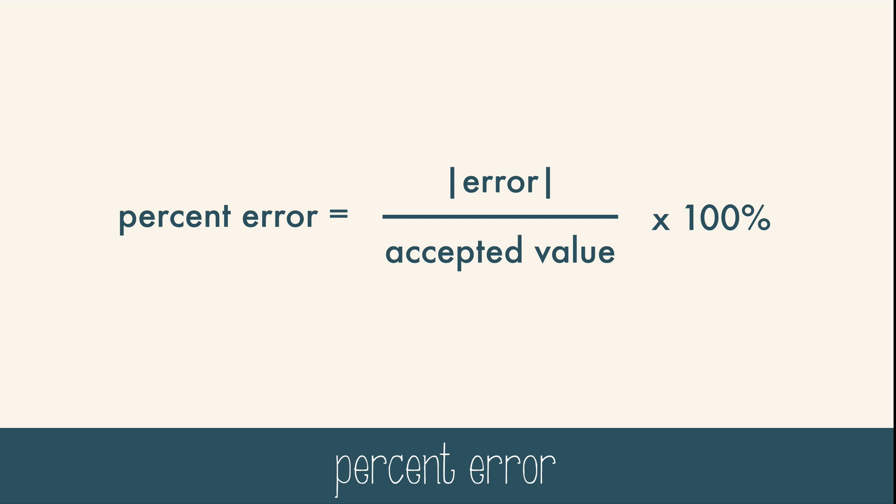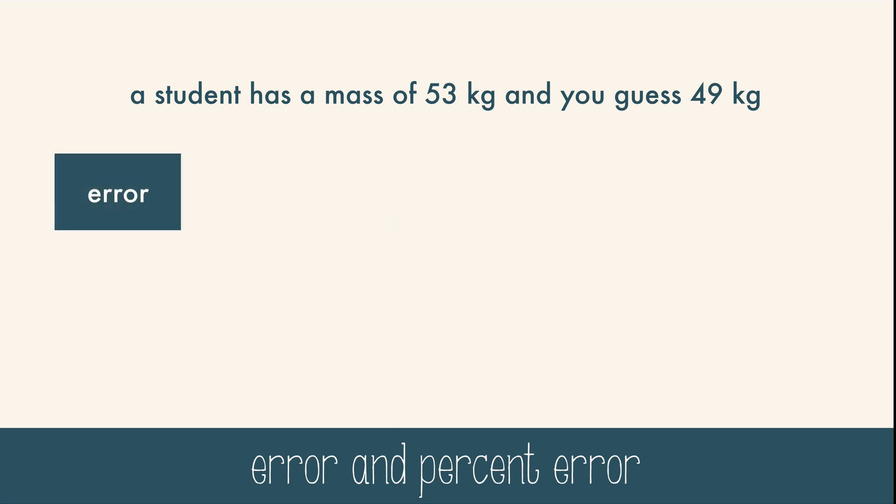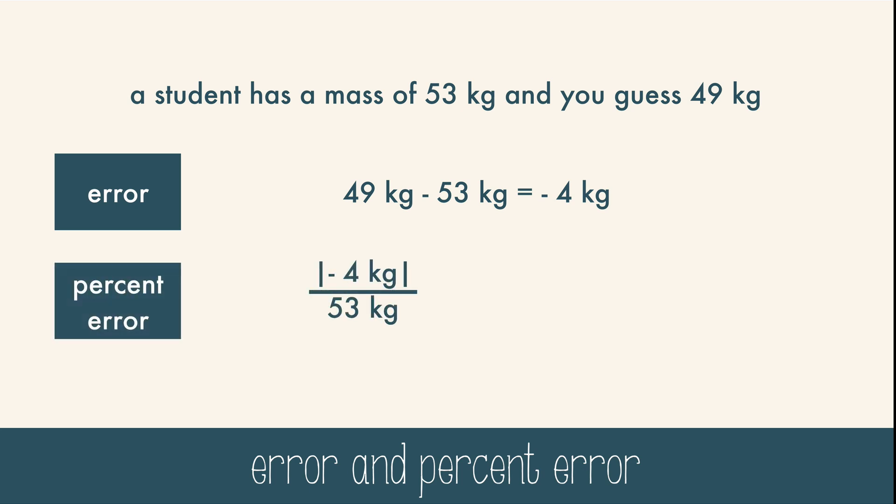Let's practice using these. A student has a mass of 53 kilograms and you guess that it's 49 kilograms. To calculate error we look at the difference in the two numbers: 49 minus 53 gives us negative 4 kilograms. The negative is significant because it tells us that we're low in our guess. A positive number would have meant a high guess. Now we can use the error to calculate percent error. Take the absolute value of the error, divide by the accepted value, and multiply by 100 and you get 7.5 percent. And depending on what this measurement was needed for, this might not be a great guess.